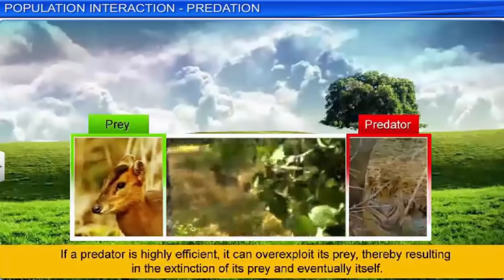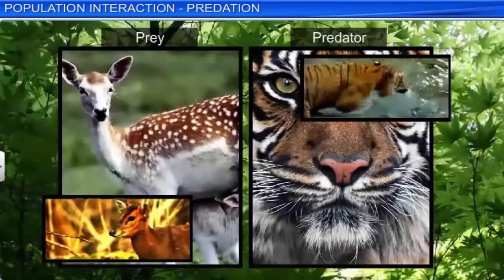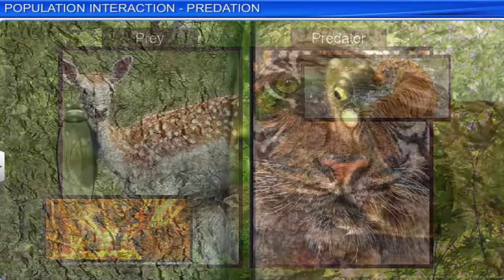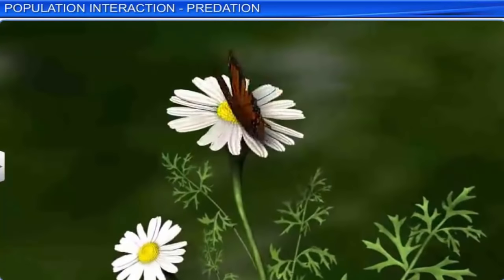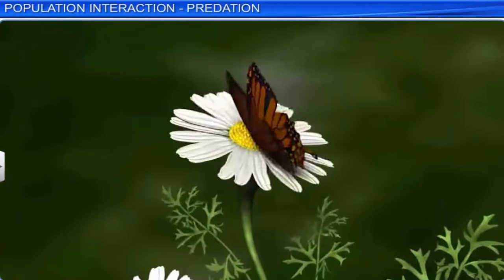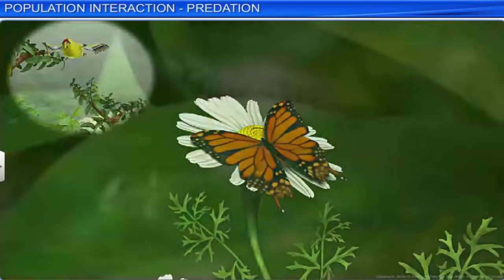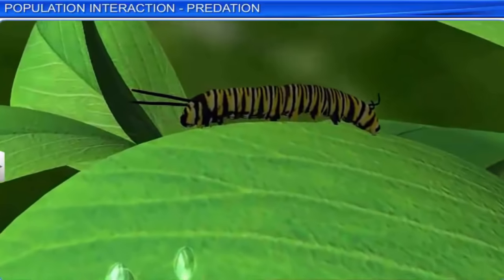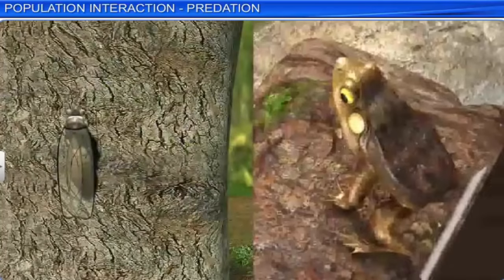In an experiment, all the starfish were removed from an enclosed area. This resulted in the rapid expansion of the mussel population, and more than 10 invertebrate species became extinct within a year due to interspecific competition. The interaction between Pisaster and Mytilus thus helped maintain species diversity in these communities. If a predator is highly efficient, it can overexploit its prey, thereby resulting in the extinction of its prey and eventually itself. However, such a situation rarely occurs in nature, as predators are prudent — they do not kill too many prey and leave some for later. Several prey species too have evolved various defenses to lessen the impact of predation. Some species of insects and frogs use camouflage to protect themselves from predators.